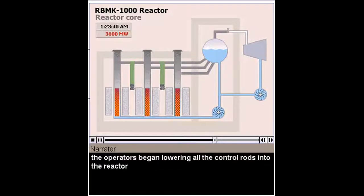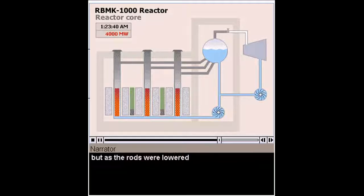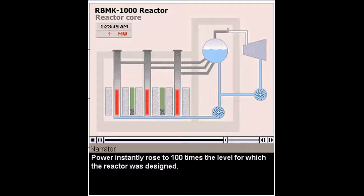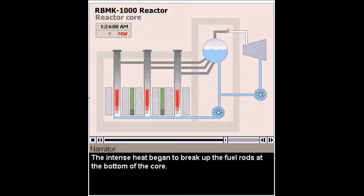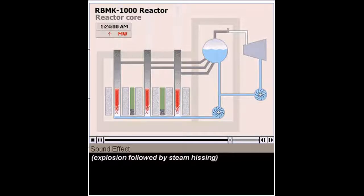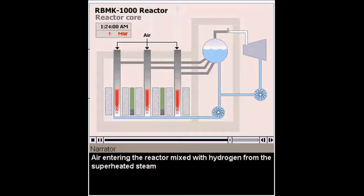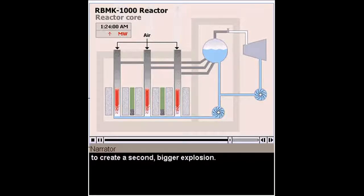Following an emergency shutdown procedure, the operators began lowering all the control rods into the reactor to stop the nuclear reaction. But as the rods were lowered, the graphite tips briefly increased the reaction and intensified it at the bottom of the core. Power instantly rose to 100 times the level for which the reactor was designed. The intense heat began to break up the fuel rods at the bottom of the core. Exactly what happened next is not clear, but there were two recorded explosions. Probably a steam explosion first blew off the lid of the reactor. Air entering the reactor mixed with hydrogen from the superheated steam and vapor from the overheated graphite blocks to create a second, bigger explosion.